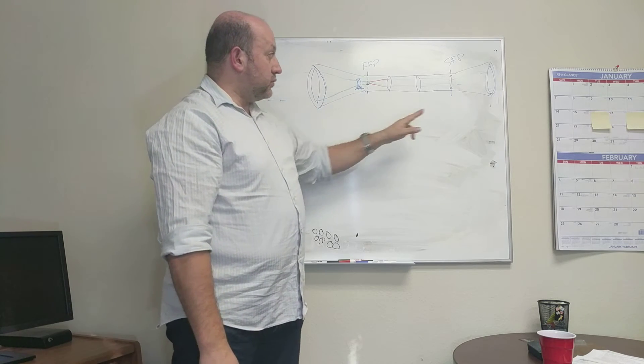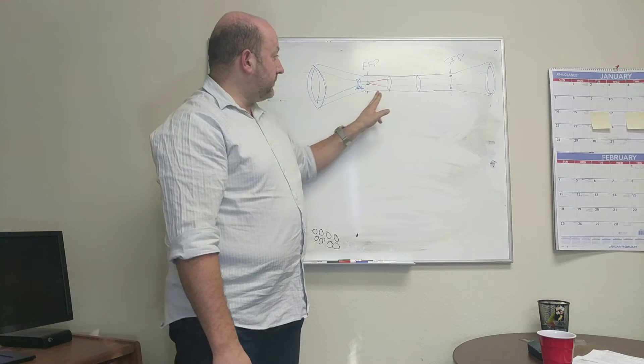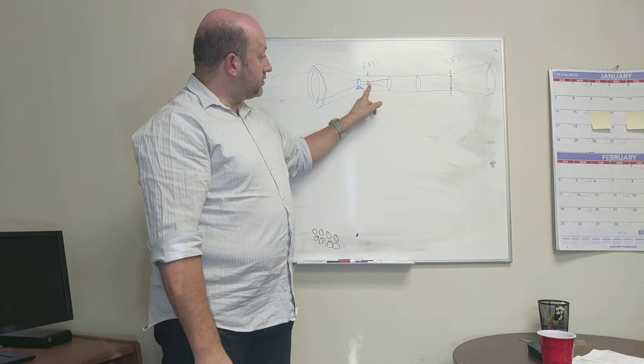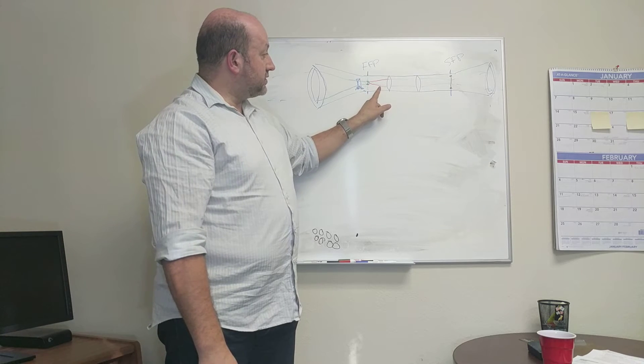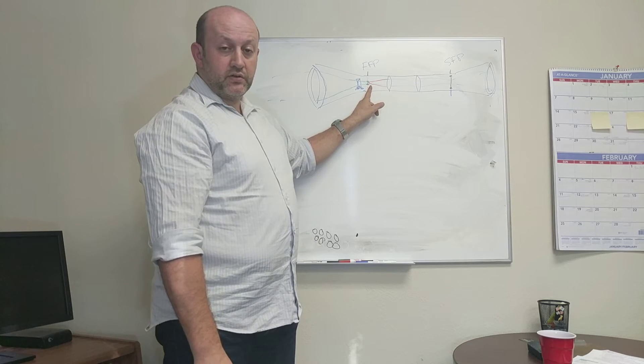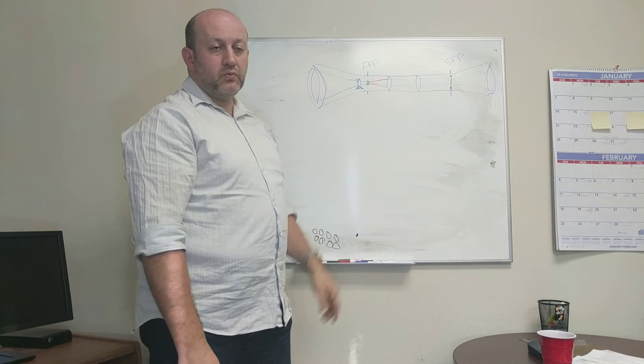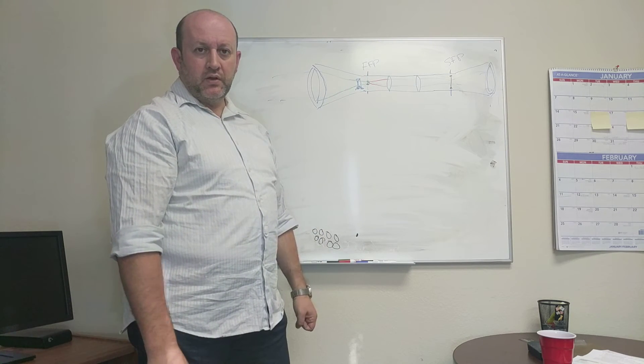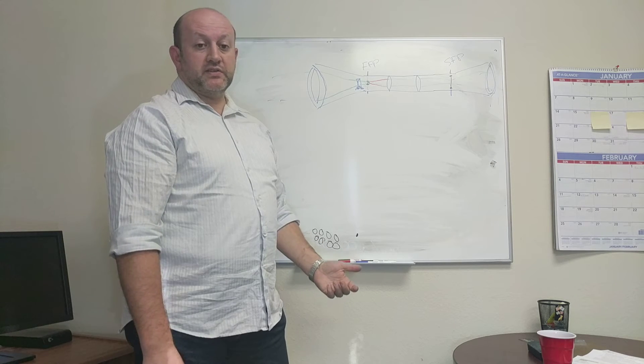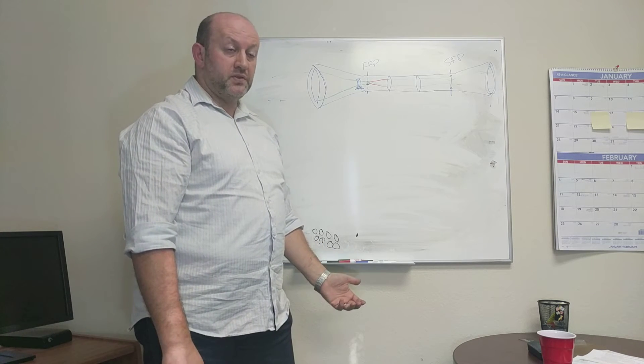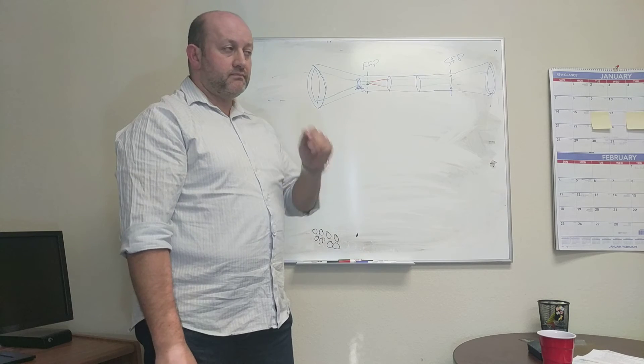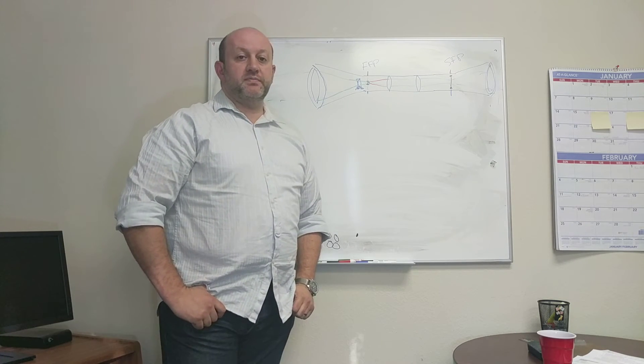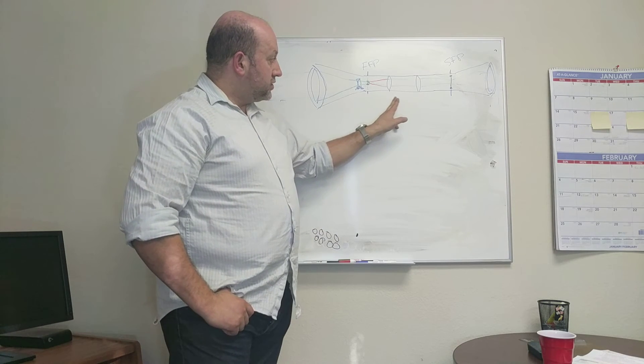Because what happens is that when you set up the eyepiece, you set it up for where the reticle is, right? So if the original image that the erector system picks up is not exactly where the reticle is, your parallax-free setting might be very, very slightly out of focus. With fancy scopes this doesn't happen as much. With less expensive scopes, it happens a little more.